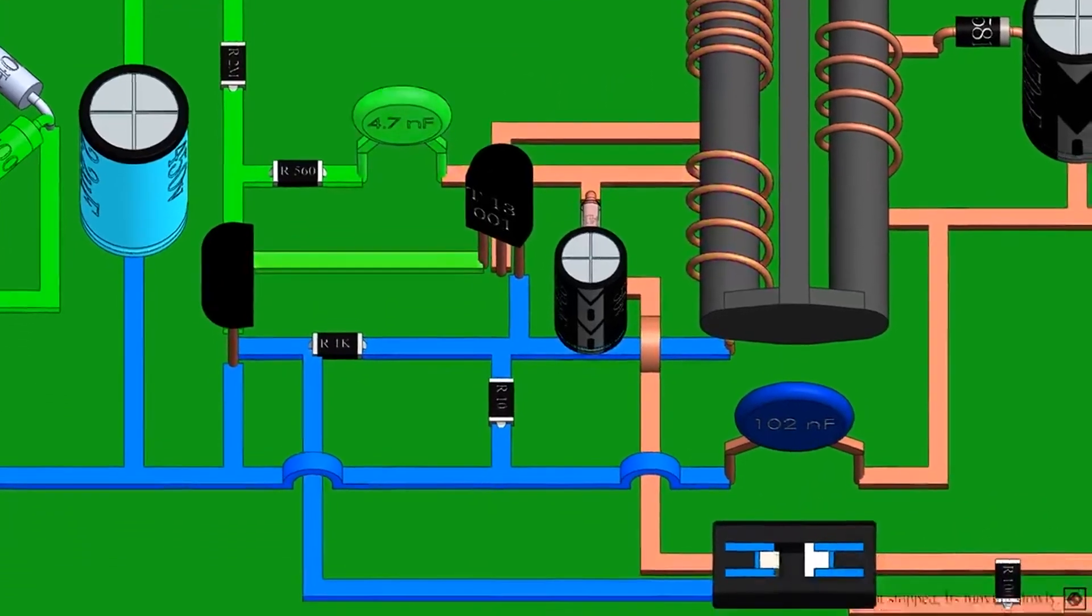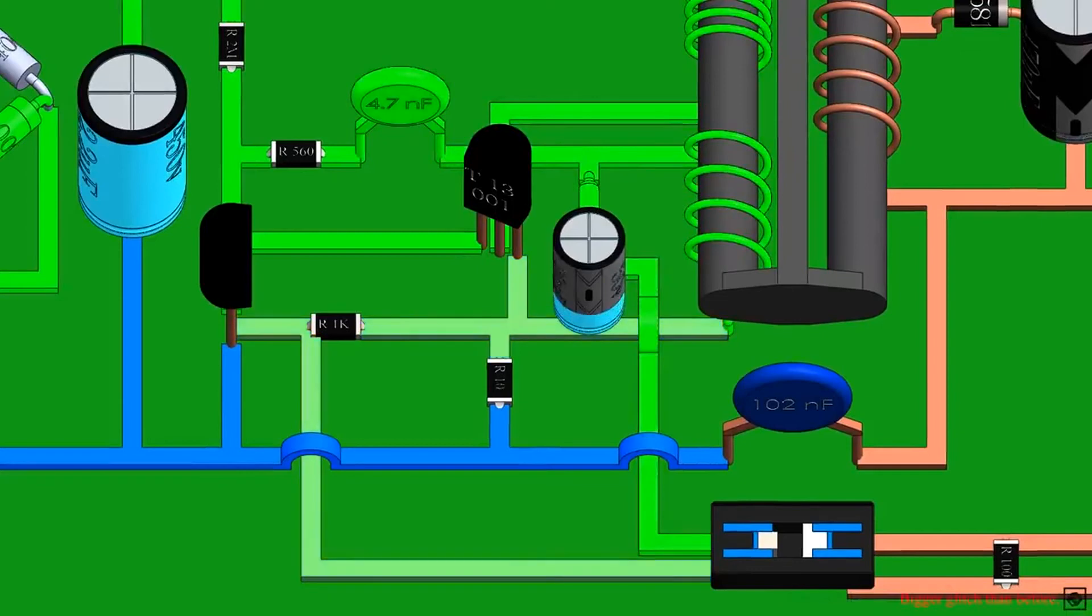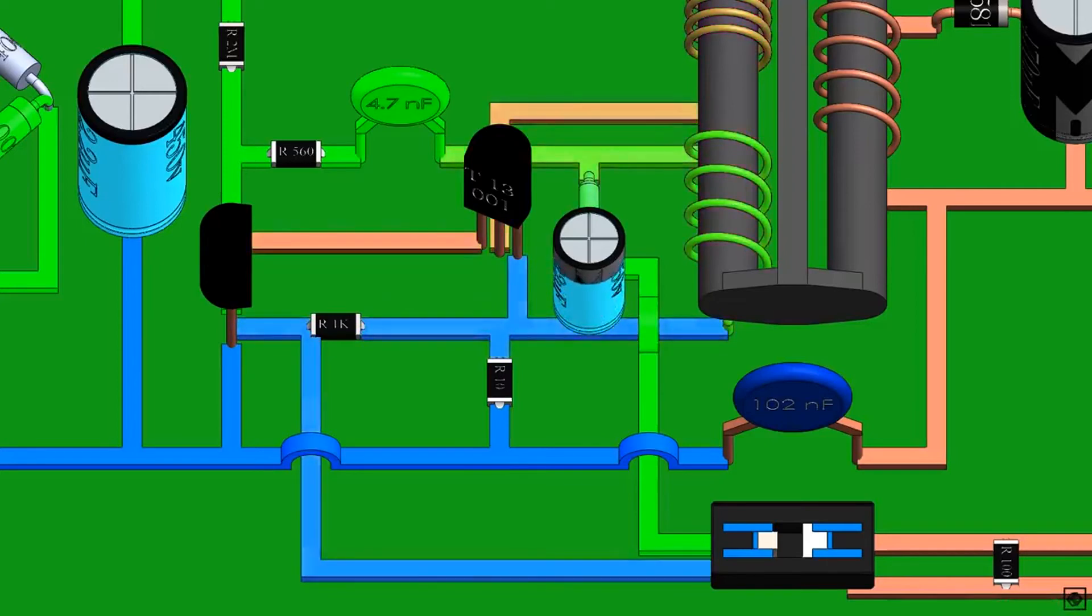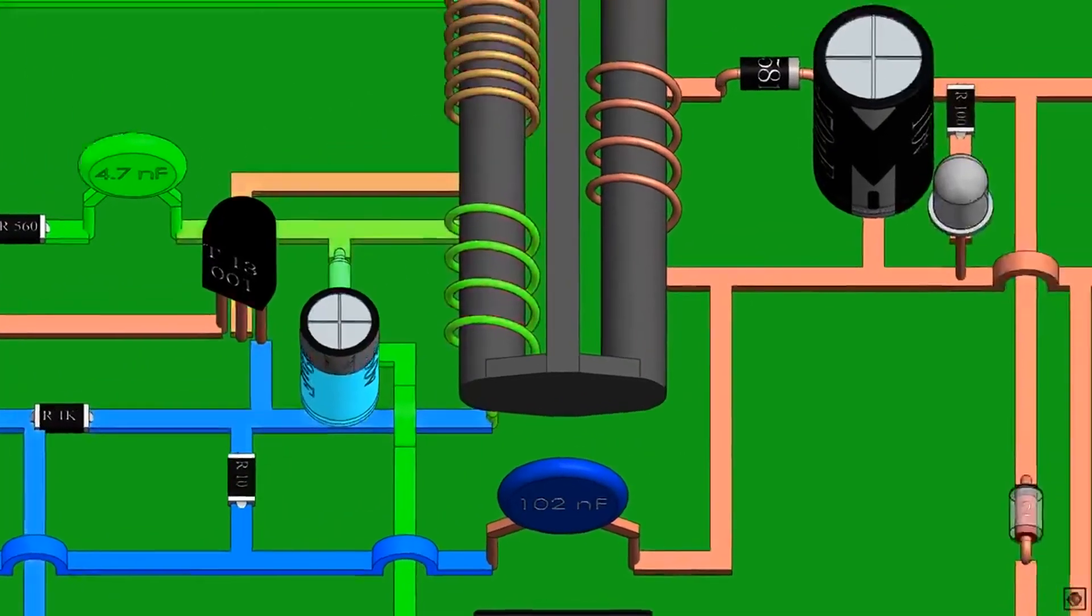At the same time, the voltage from the auxiliary also turns the diode on and charges the capacitor, and flows to the optocoupler. This diode and capacitor convert the AC from the auxiliary coil to DC for the optocoupler.